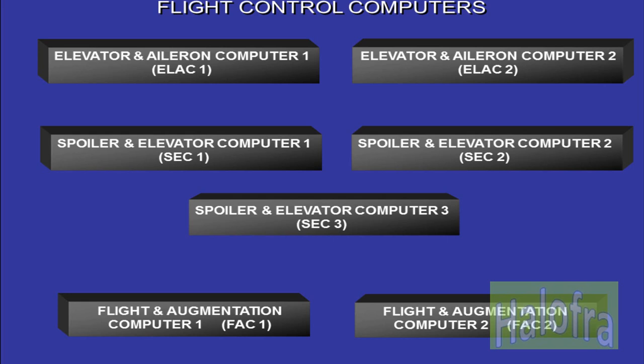The flight control system is designed to incorporate several redundancy and safety concepts. Each computer is able to control the aircraft in flight. Each computer is divided into two physical units, which are programmed in two different software languages. There are segregated power supply, control source, and signaling lanes.